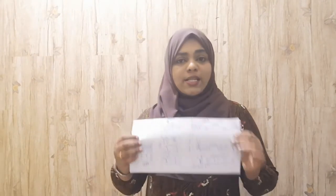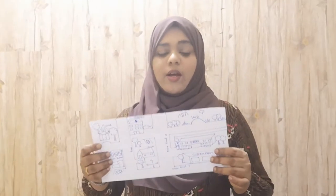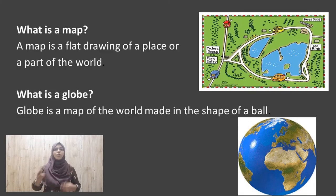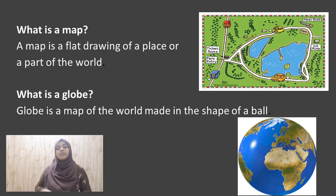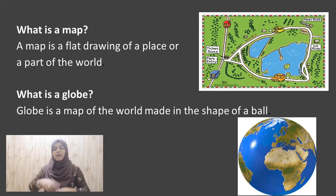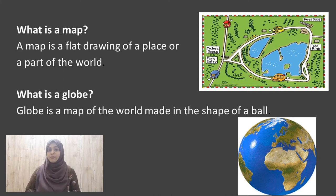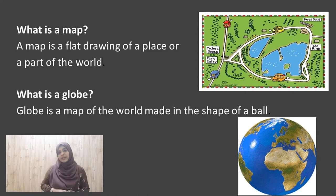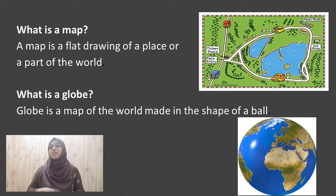A map is easy to carry anywhere — I can fold it and put it in my folder. A globe is a map of the world in the shape of a ball; it is round and three-dimensional. The map is flat and two-dimensional. The globe is used to locate areas from bigger places, but the map is used to locate and find places from smaller areas.